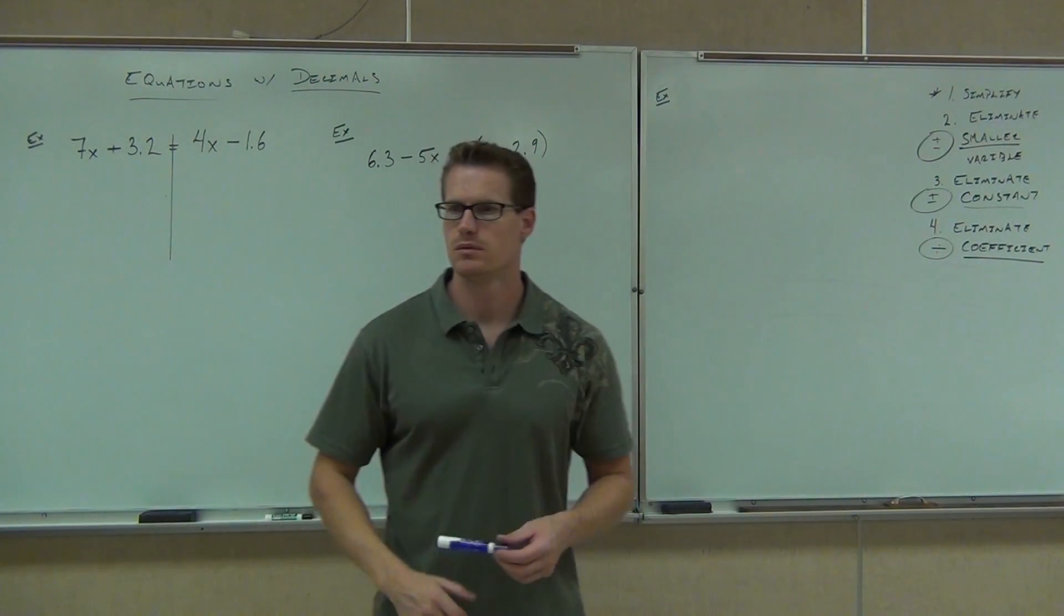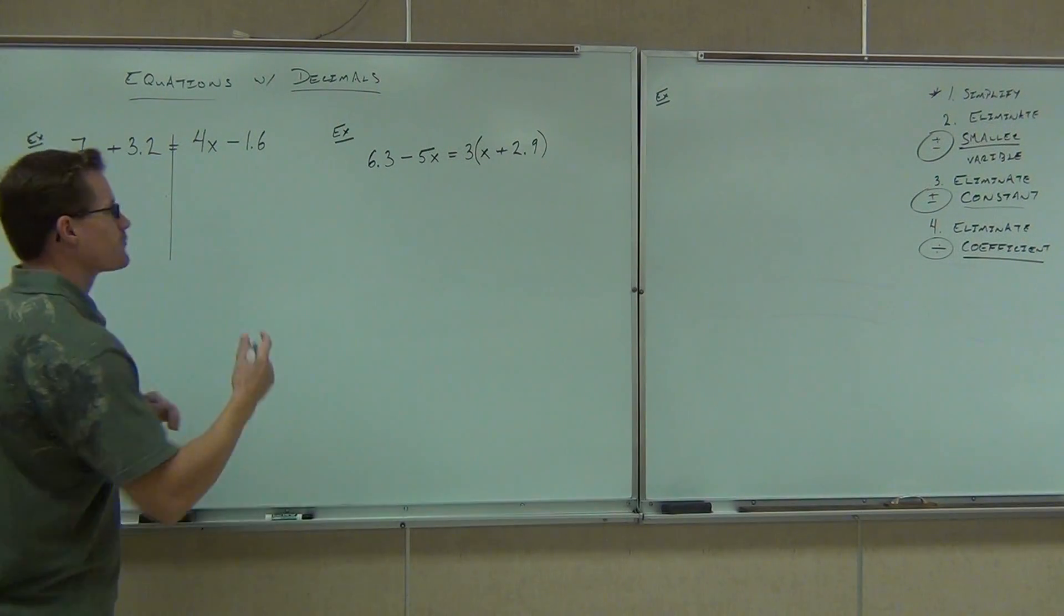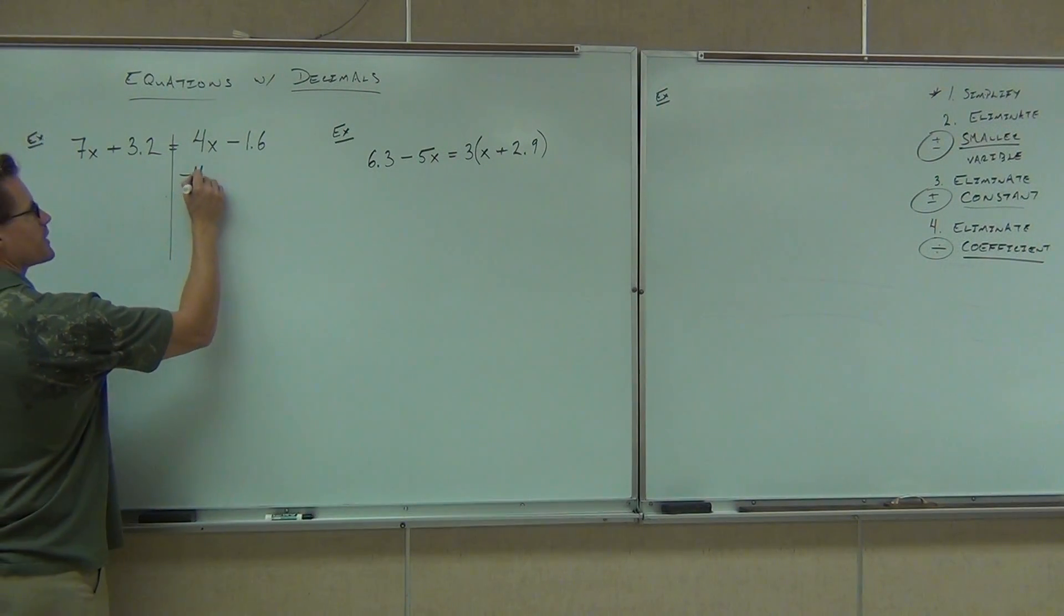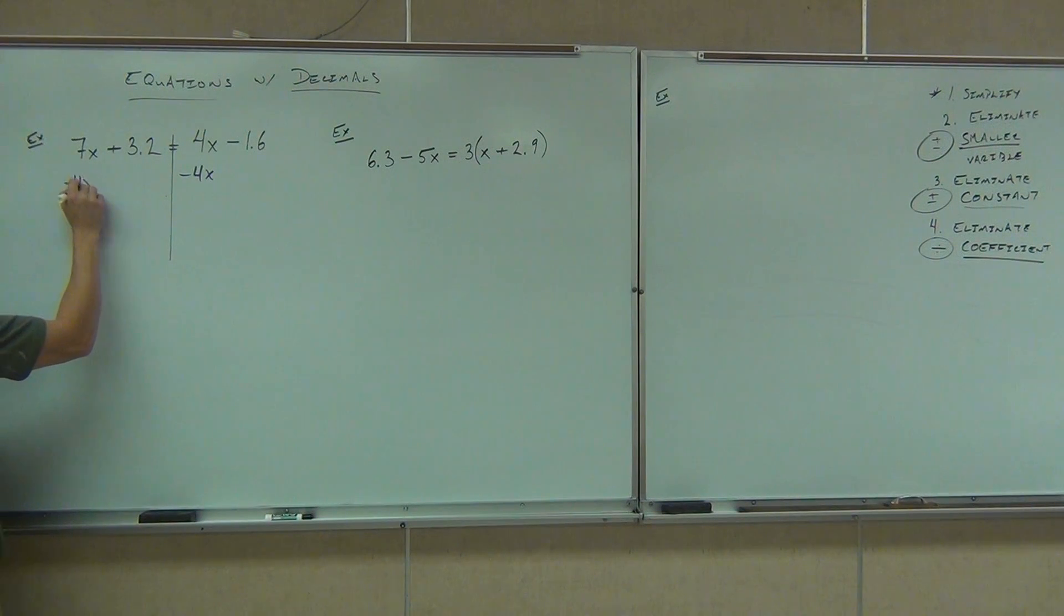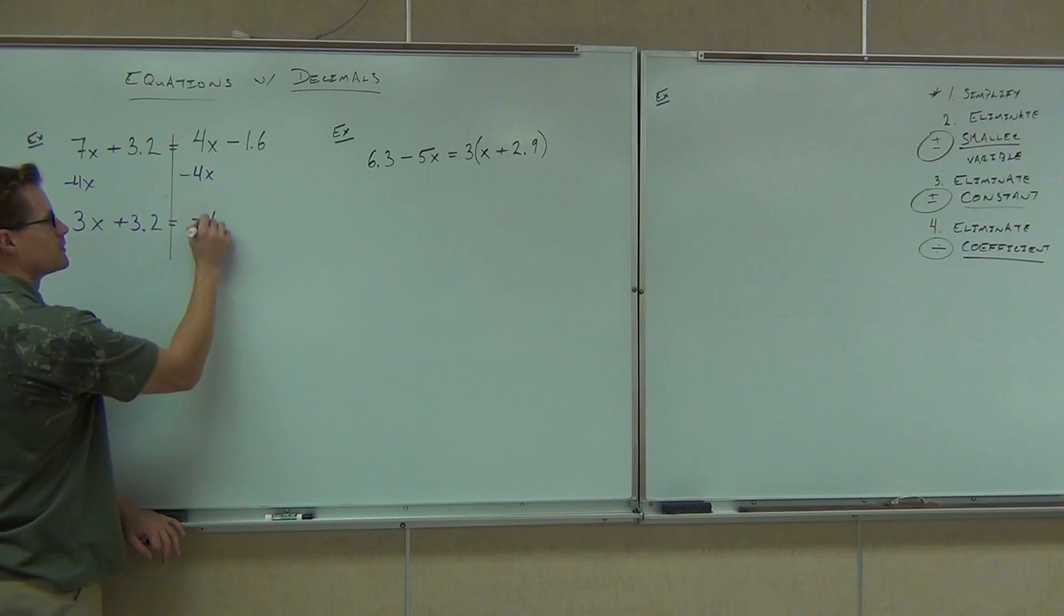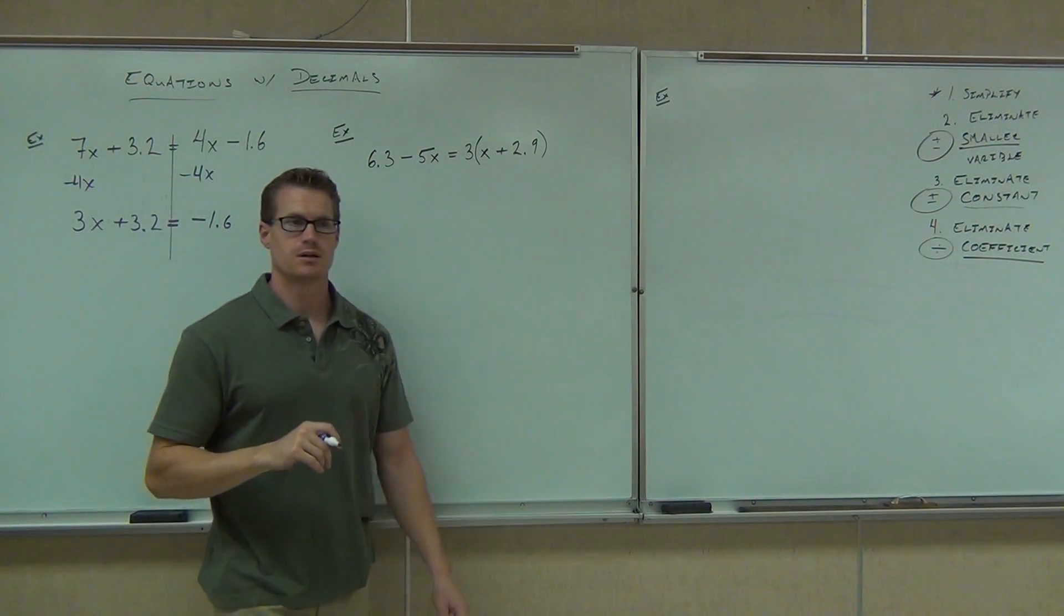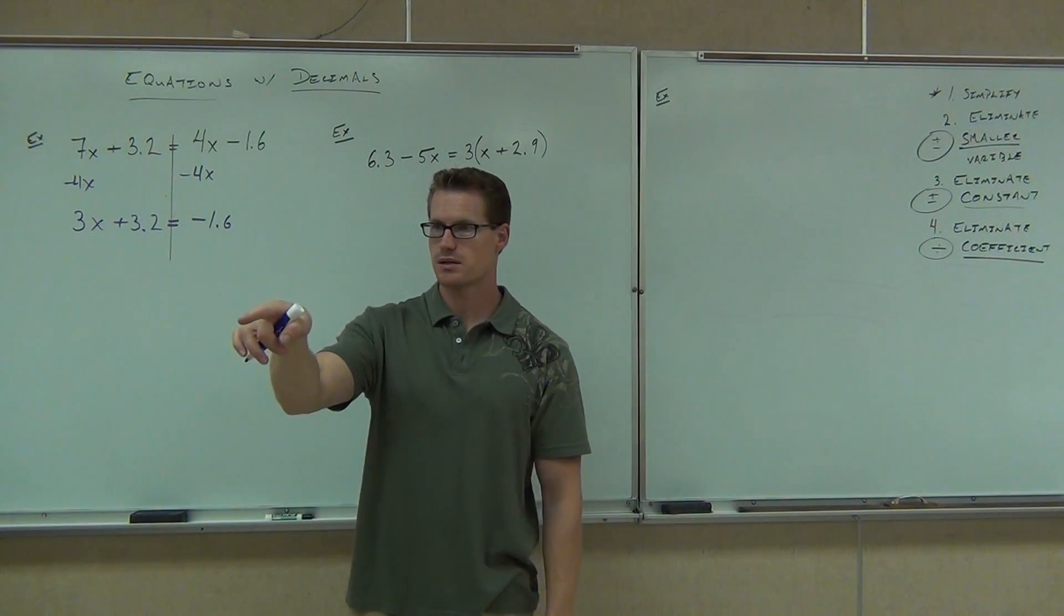What's a smaller variable? 4x. So the first thing you should have done on your paper, get rid of that 4x. That means you're going to subtract that from both sides. You'll get 3x plus 3.2 equals what? Negative 1.6. Good, you keep that sign. Did you make it that far, folks? Give me a little head nod if you did. Yeah. This side? Alright.